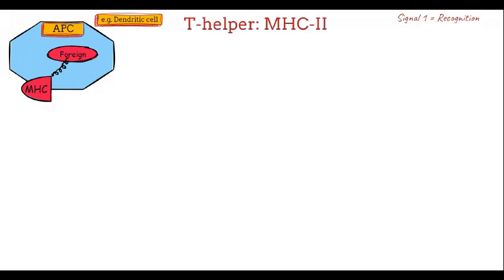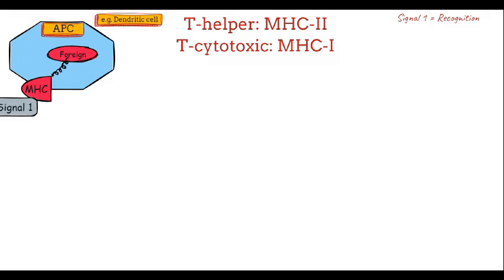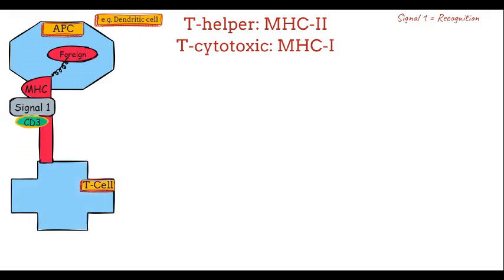For helper T-cells, the antigen is presented via MHC class 2, while for cytotoxic T-cells, it is presented via MHC class 1. At this point, signal 1 occurs: the T-cell receptor binds to the antigen-MHC complex, with the CD3 complex playing a crucial role in stabilizing this interaction and initiating intracellular signaling. This binding is the starting point for T-cell activation, signaling the presence of a foreign antigen.